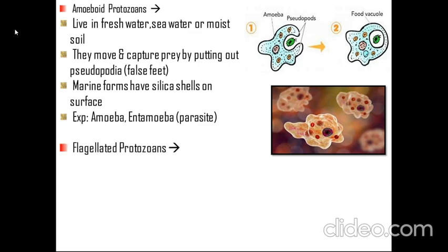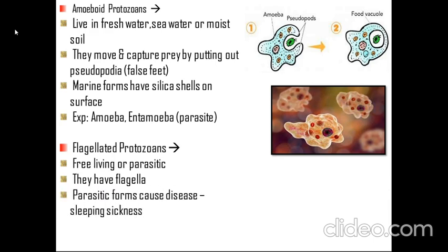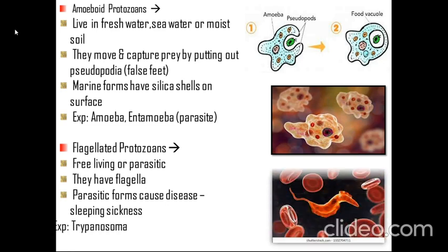The next one is flagellated protozoans. Many of them are parasitic and have flagella, which is where the name comes from. Their parasitic forms can cause diseases like sleeping sickness. An example is Trypanosoma.